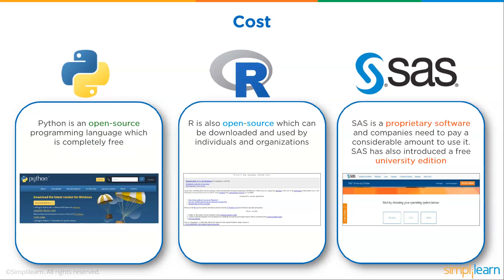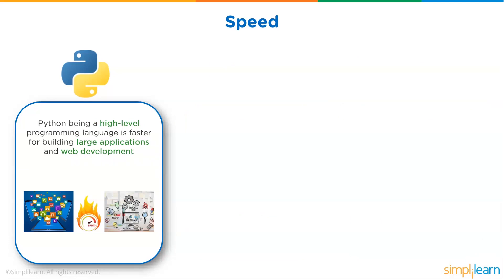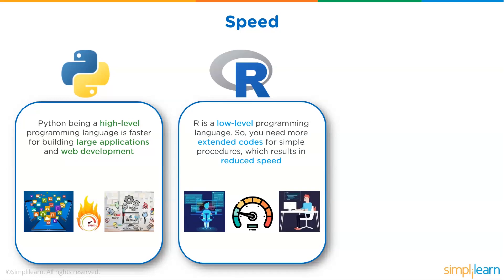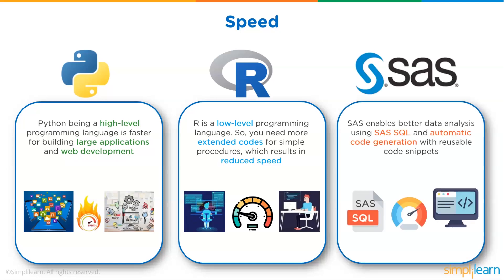When we look at speed: Python, being a high-level programming language, is faster for building large applications in web development — you can replace ASP, PHP, or Java backend with Python for fast web output. R is a low-level programming language, so it needs more extended code for simple procedures, which results in reduced speed, though it is very fast for basic statistical analysis and setup. SAS enables better data analysis using SAS SQL and automatic code generation with reusable code snippets, making development quicker, with its own fast backend processing.